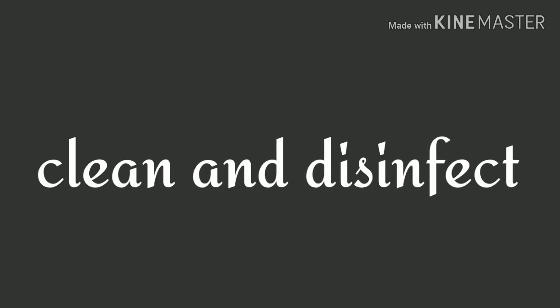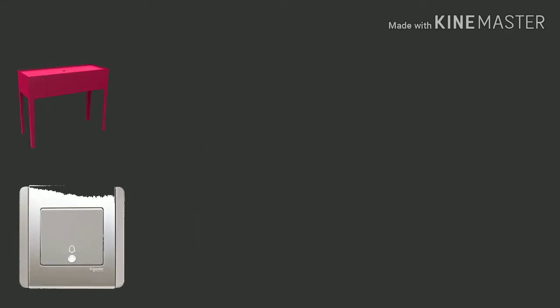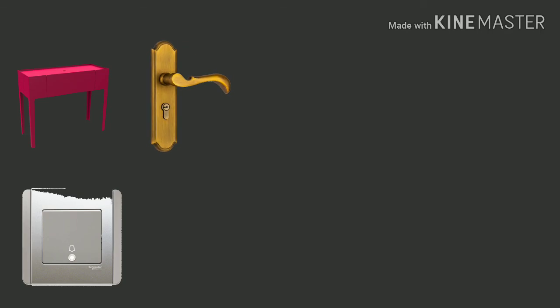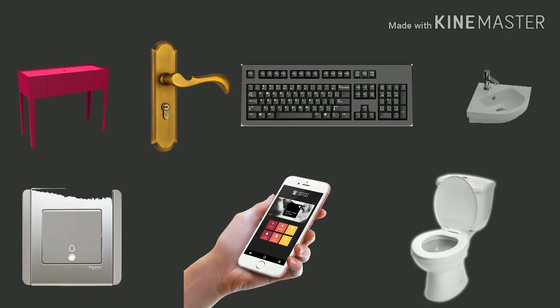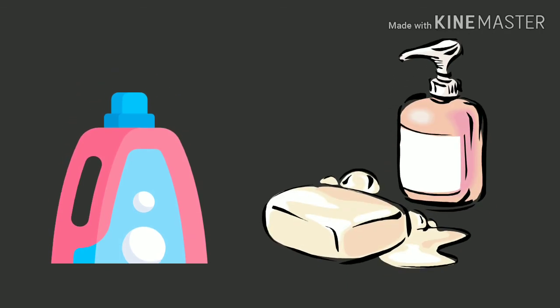The last step, clean and disinfect. Clean and disinfect frequently touched surfaces daily. This includes tables, light switches, handles, phones, keyboards, toilets, and sinks. If surfaces are dirty, clean them using detergent or soap and water prior to disinfection.